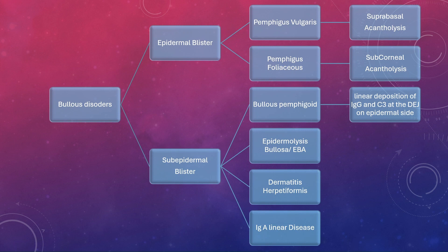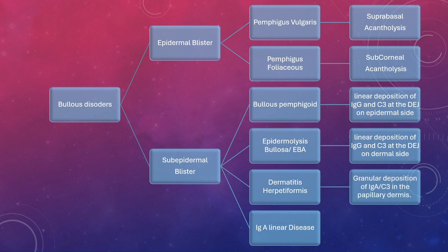In epidermolysis bullosa acquisita there is a linear deposition of immunoglobulin G and C3 at the dermal site of the dermo-epidermal junction. In dermatitis herpetiformis there is a granular deposition of IgA and C3 in the papillary dermis. In IgA linear disease there is a linear deposition of IgA around the basement membrane.